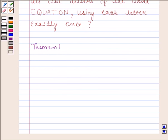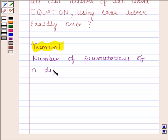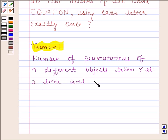Theorem 1 states that the number of permutations of n different objects taken r at a time and the objects do not repeat